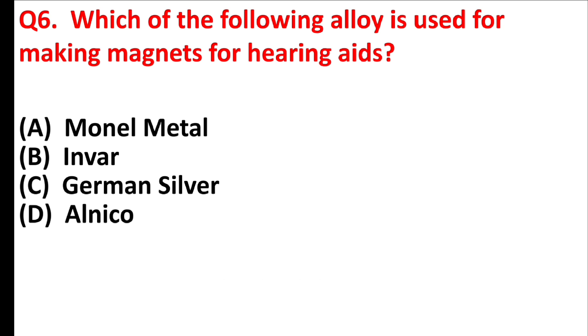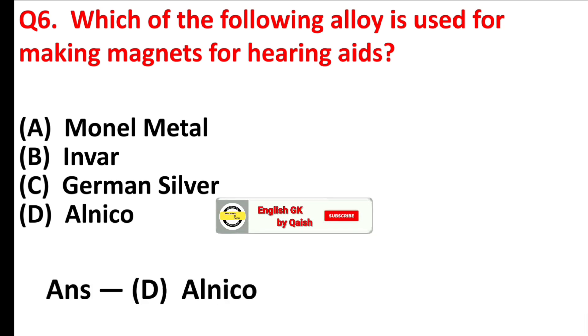Which of the following alloys is used for making magnets for hearing aids? Answer is option D: Alnico.